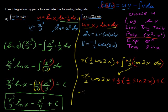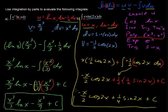In the end we have negative x over 2 cosine of 2x plus one-fourth sine of 2x plus the constant of integration. There's a couple of examples of using integration by parts.